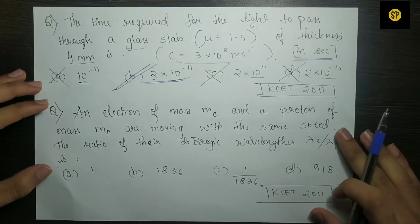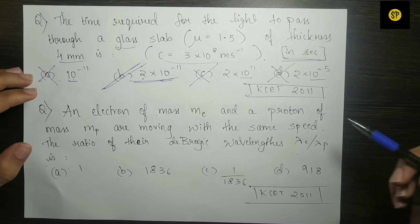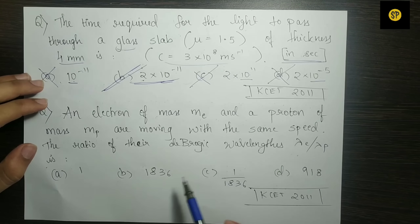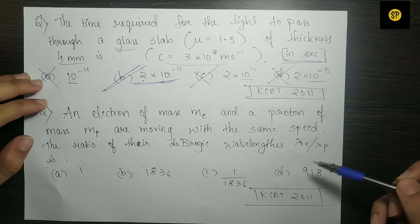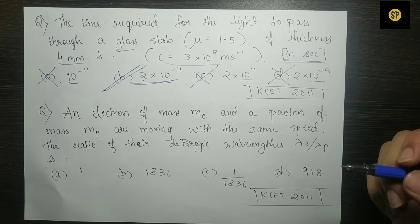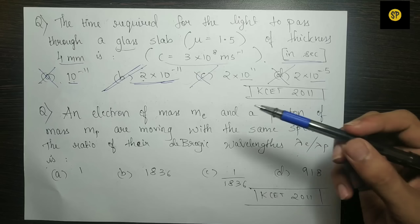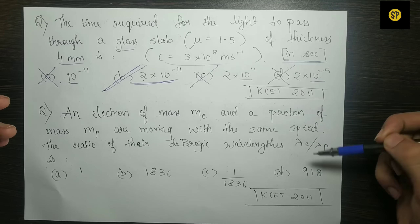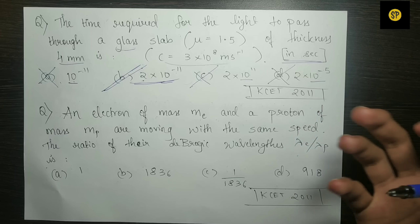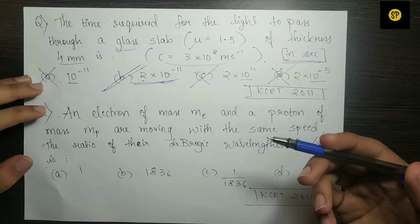Next question: An electron of mass Me and a proton of mass Mp are moving with the same speed. Find the ratio of their de Broglie wavelengths, lambda E by lambda P. Using lambda equal to h by p and p equal to mv, since v is the same, the wavelength is inversely proportional to mass. So the answer is the inverse of the mass ratio, Mp by Me.